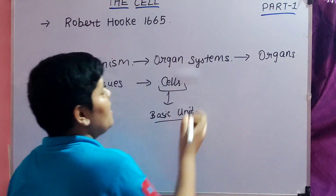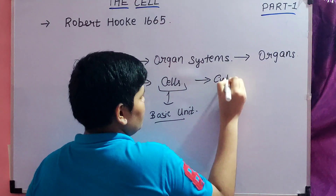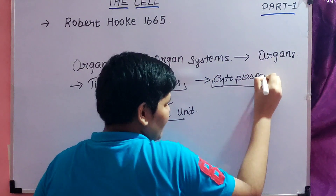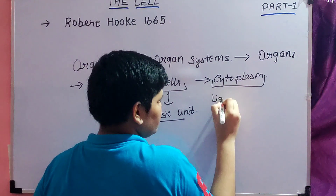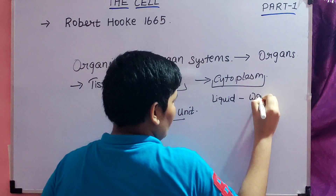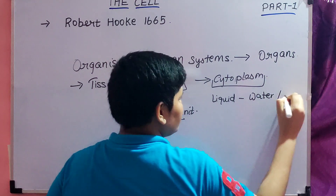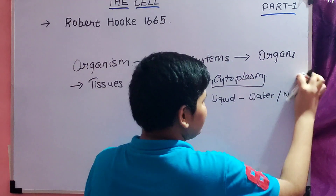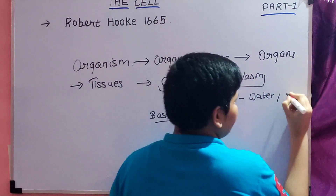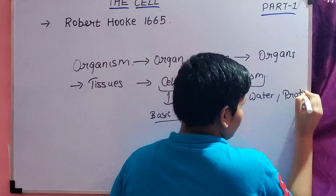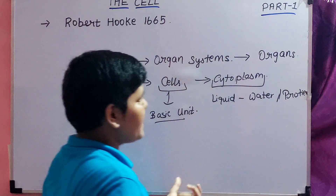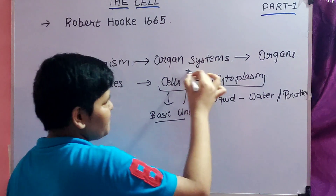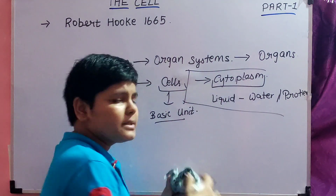There is also one more part known as cytoplasm. Cytoplasm is actually a liquid comprising water and proteins. So a liquid comprising water and proteins is known as cytoplasm, and if you go in more detail, even cytoplasm has many different parts.